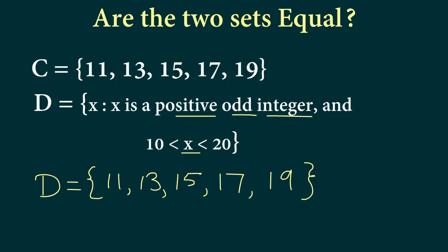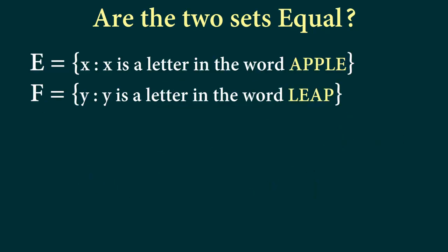So this is set D: 11, 13, 15, 17, 19. And we see that set C is 11, 13, 15, 17, 19. And indeed we can say that set C is equal to set D. And let's take a look at one last example here.